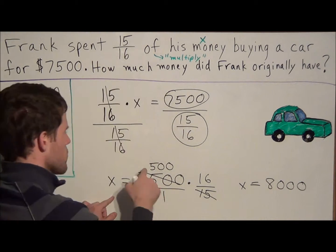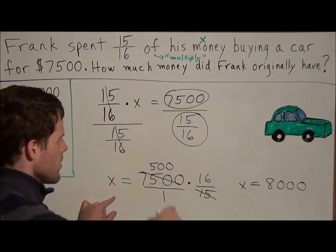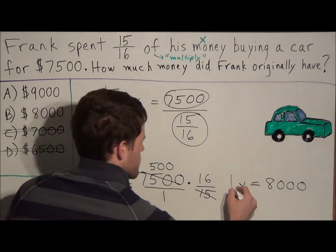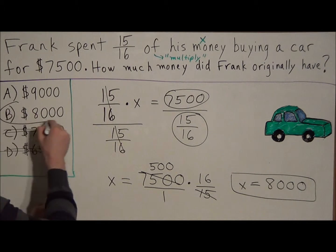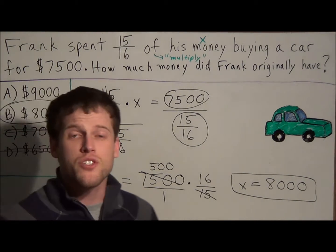If you were doing this mentally, you could do 5 times 16 is 80, with two zeros is 8,000. So we could go over to our answer choices here, and the answer to this problem is going to be choice B.